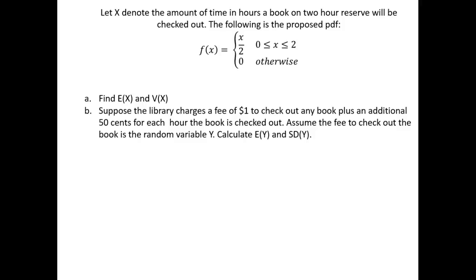Suppose x is the amount of time in hours a book on two-hour reserve will be checked out. The proposed PDF is f(x) = x/2 for x between 0 and 2. We want to first find the expectation of x and then the variance.